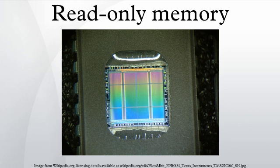The time span over which a ROM remains accurately readable is not limited by write cycling. The data retention of EPROM, EAROM, EEPROM, and flash may be limited by charge leaking from the floating gates of the memory cell transistors. Leakage is accelerated by high temperatures or radiation. Masked ROM and fuse and diffuse PROM do not suffer from this effect, as their data retention depends on physical rather than electrical permanence of the integrated circuit.